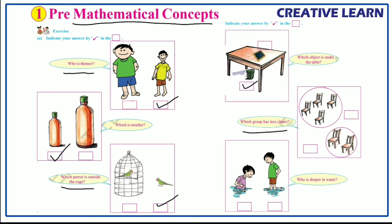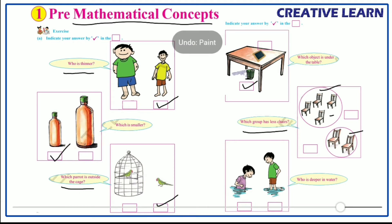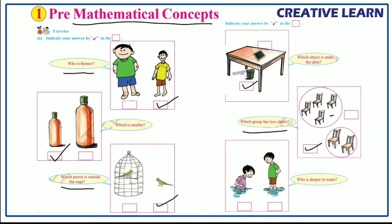Next: which group has less chairs? In the picture, two groups of chairs are given. The first group has four chairs and the second group has only two chairs. From these two, the second group has fewer chairs, so we have to keep the right mark in this box.